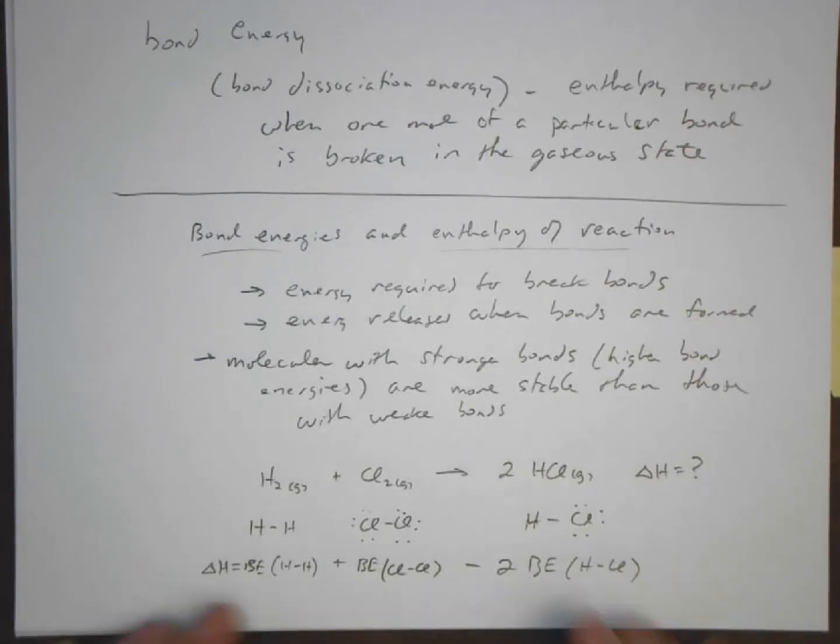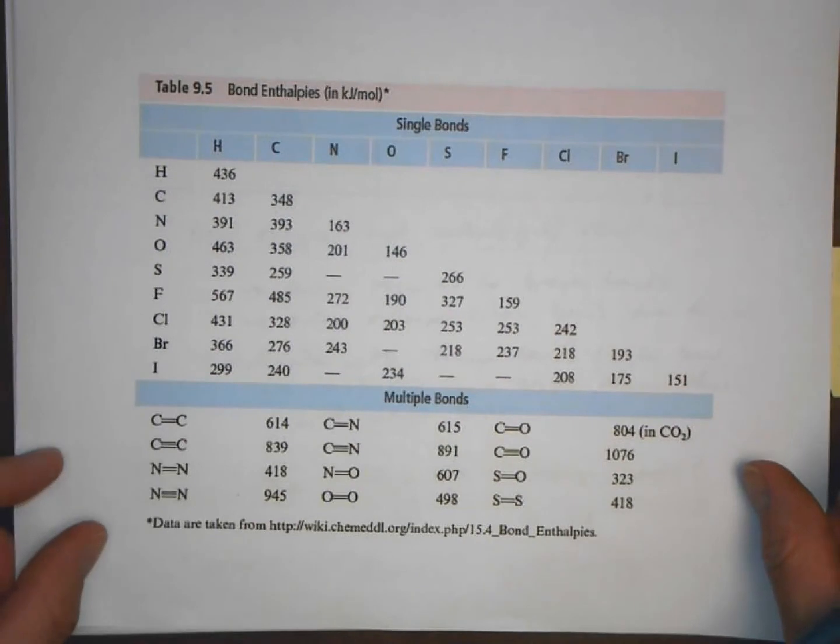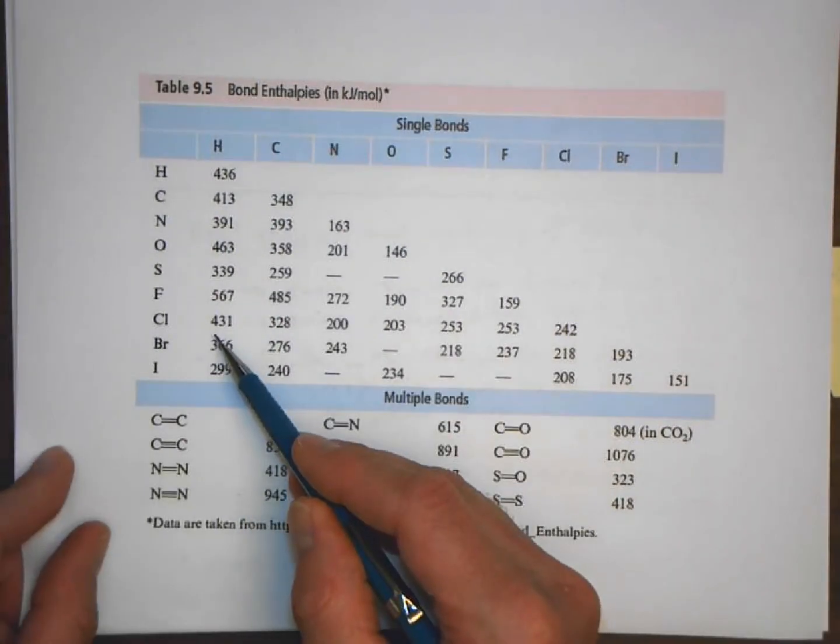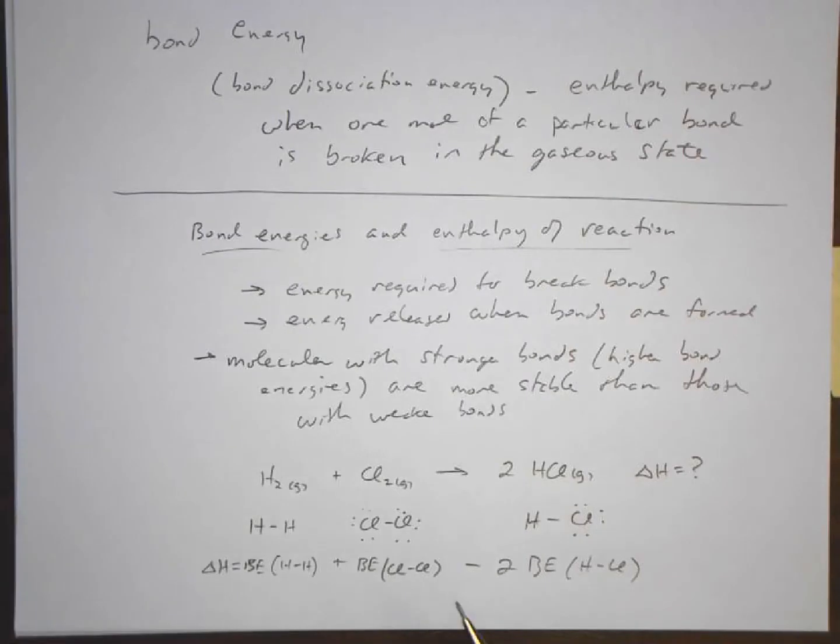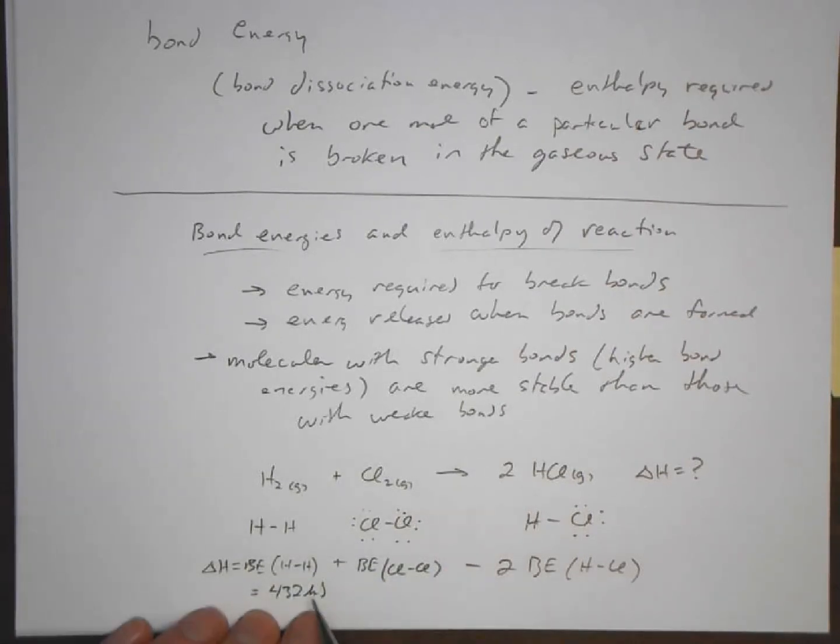We take these values, we get these values from this table, table 9.5 in your text. So chlorine-hydrogen bond has a certain value and so on. Now I apologize here because my values that I have written down are a little bit different. They came from a slightly different table.